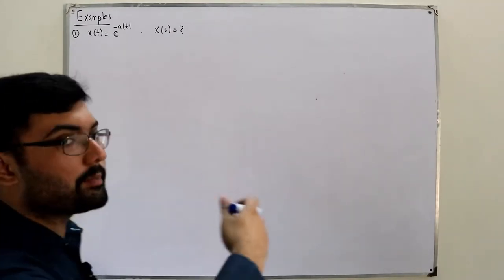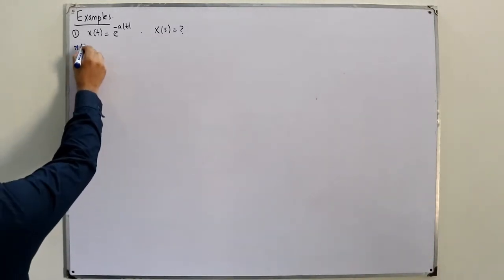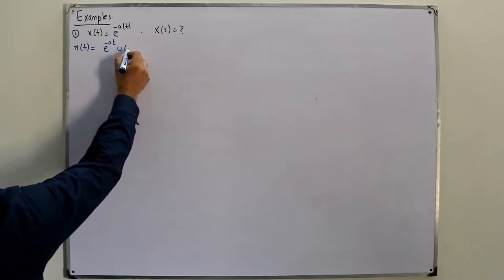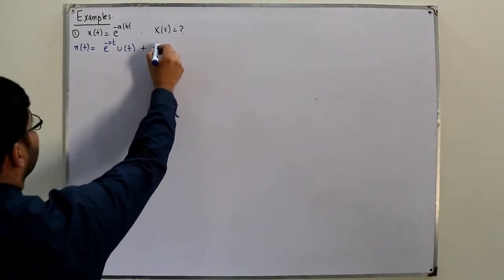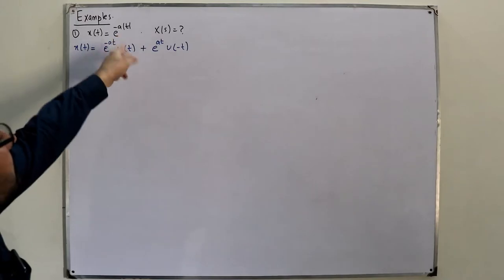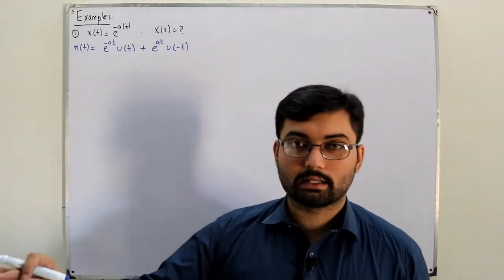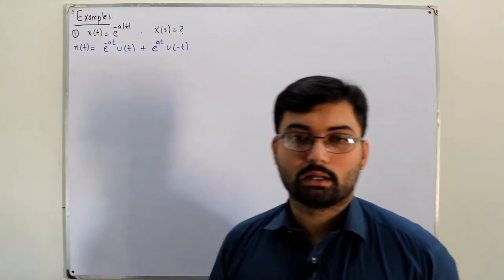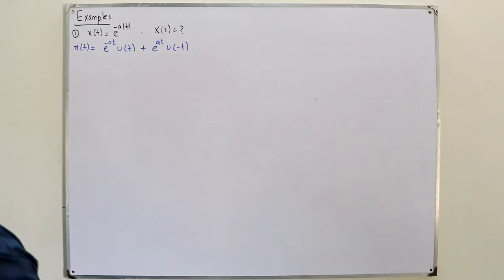We split x(t) depending on the value of t being positive or negative into a left-side and right-side exponential. We can write x(t) = e^(-at)u(t) for positive t, plus e^(at)u(-t) for negative t, because |t| equals +t for positive t and -t for negative t.